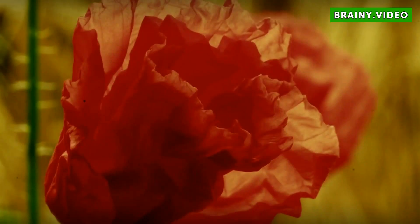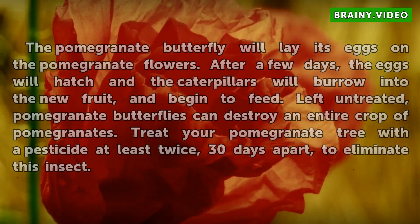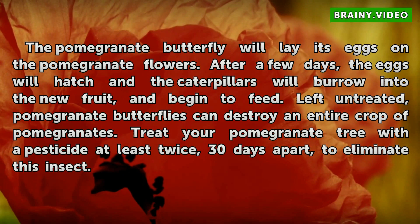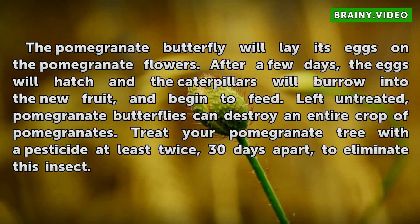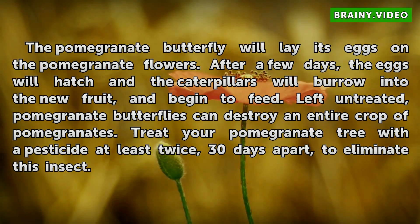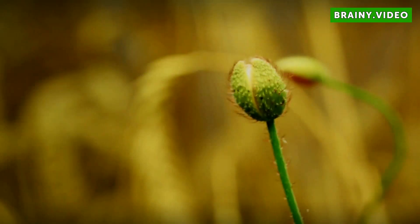Disfigured fruit. The pomegranate butterfly will lay its eggs on the pomegranate flowers. After a few days, the eggs will hatch and the caterpillars will burrow into the new fruit and begin to feed. Left untreated, pomegranate butterflies can destroy an entire crop of pomegranates. Treat your pomegranate tree with a pesticide at least twice, 30 days apart, to eliminate this insect.